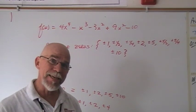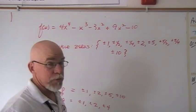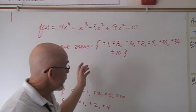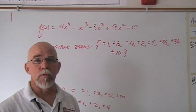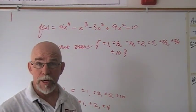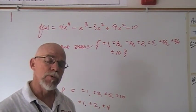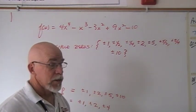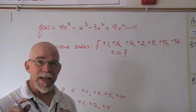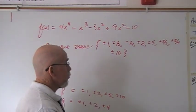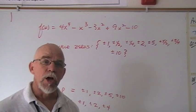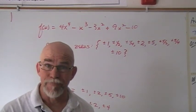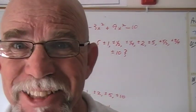Of those 16, because we know we have a fourth-degree polynomial, the maximum number of rational real roots we can have is 4. So the 4 roots we'd find will be somewhere in that list of 16 possible rational numbers. That's how you find the list of possible rational roots. We are the Ask Academy.